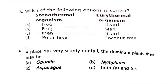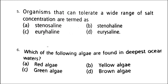Next: a place has very scanty rainfall. The dominant plants there may be A. Opuntia, B. Lymphia, C. Asparagus, or D. Both A and C. The correct option is option D. Plants which grow in dry or xeric conditions where availability of water is negligible are known as xerophytes. Opuntia and asparagus are succulents which store water in their stem and root respectively.